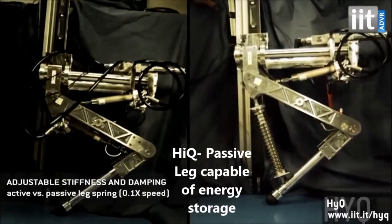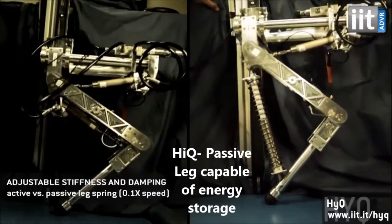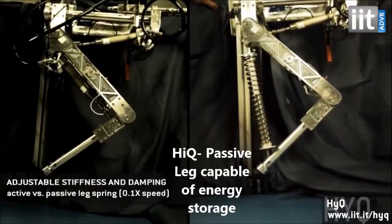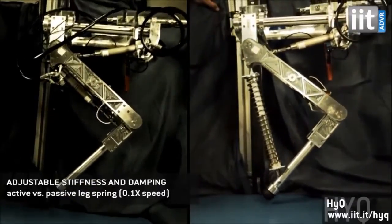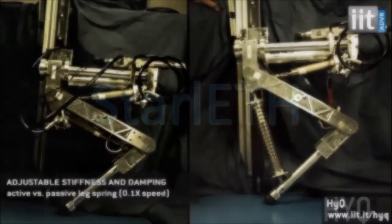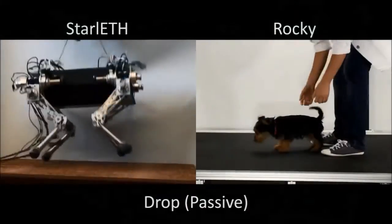The HyQ robot is hydraulically actuated. However, the active control feedback allows it to mimic the motion of the passive system powered by a spring. However, the hydraulic actuator is unable to store energy like the spring or the Starleth leg.